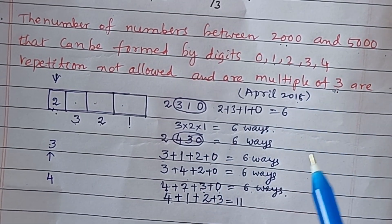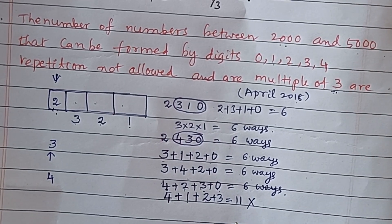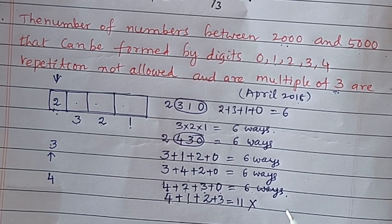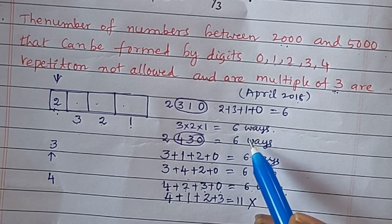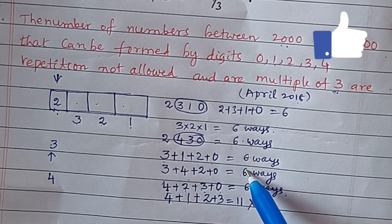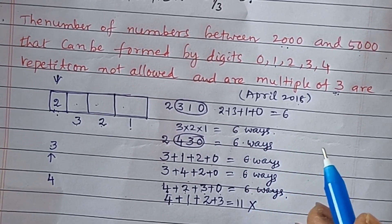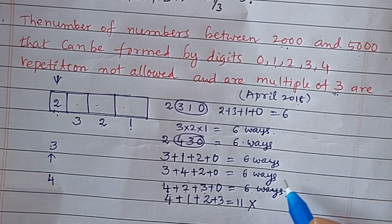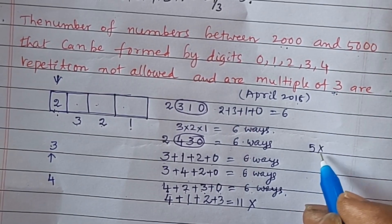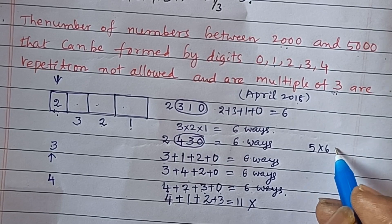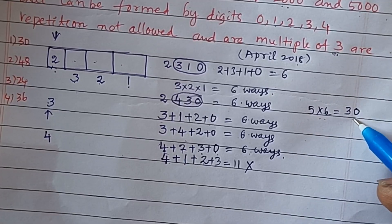Following all the patterns, the total number of valid cases is counted: one, two, three, four, five cases giving 6 ways each, for a total of 5 × 6 = 30.